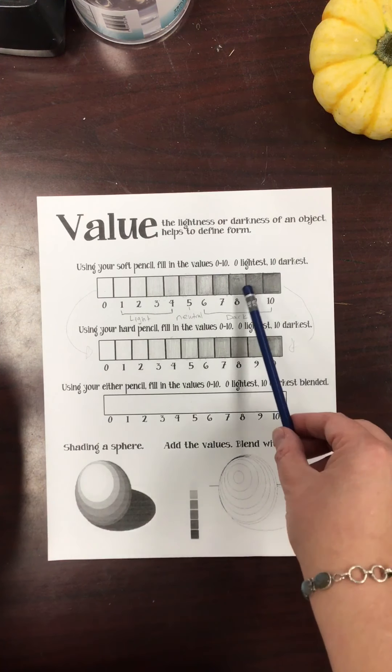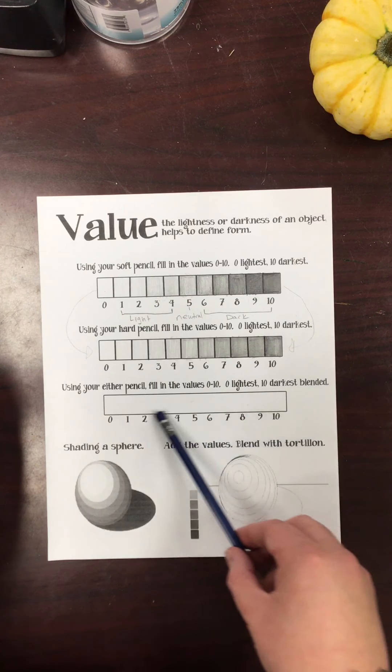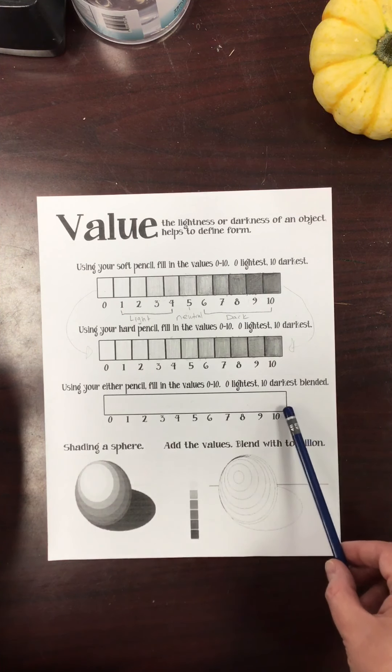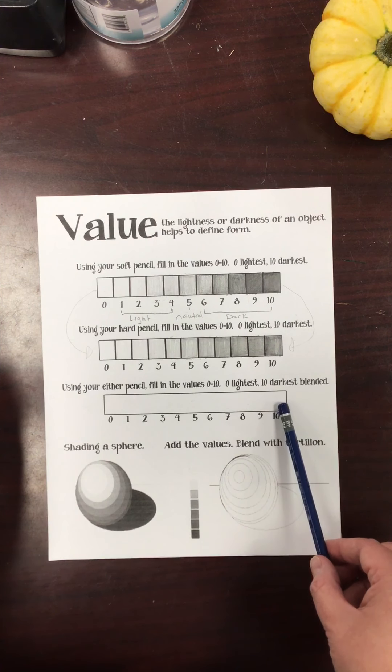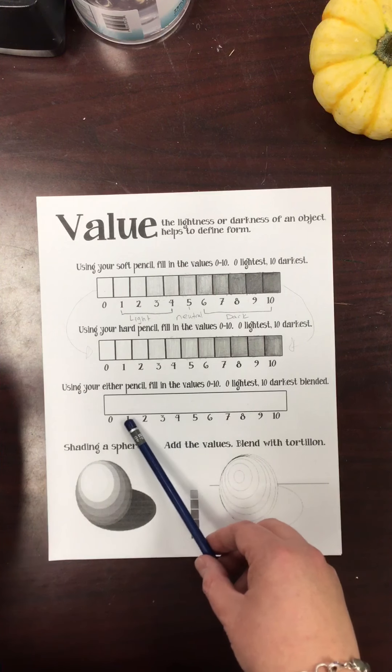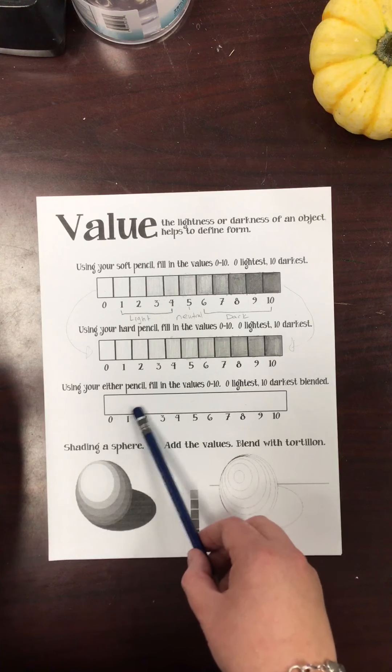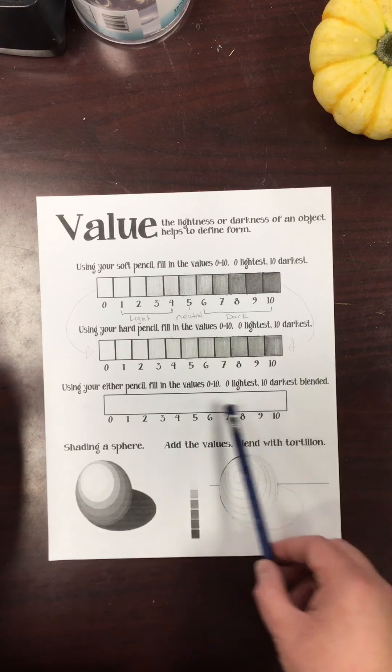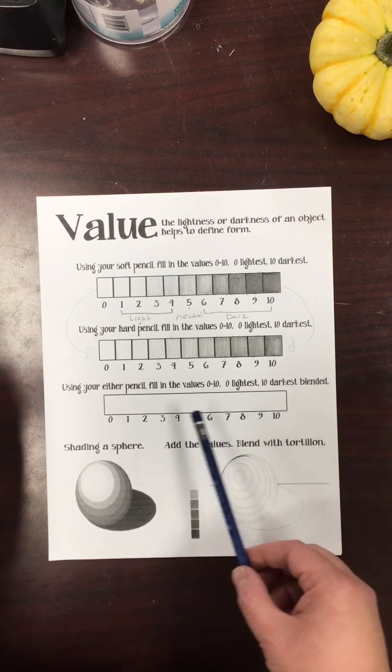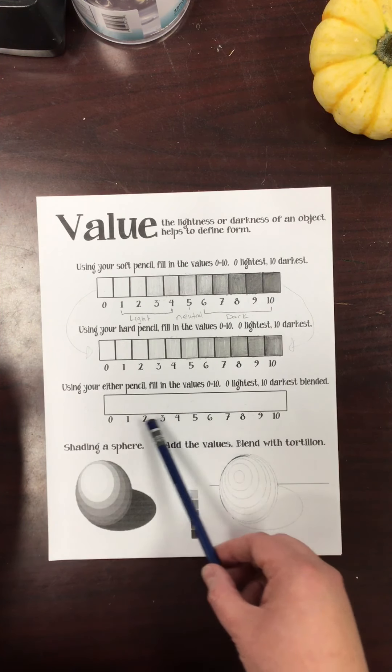So what we're going to do is we're going to be kind of replicating this, but instead of doing boxes we're going to do one continuous fade. So I'm going to start over at the 10 side because I like kind of establishing my dark first, and then I will release my pressure more and more and more until I get it nice and light over there. It doesn't really matter what side you start on, and even sometimes I like to flip back and forth.